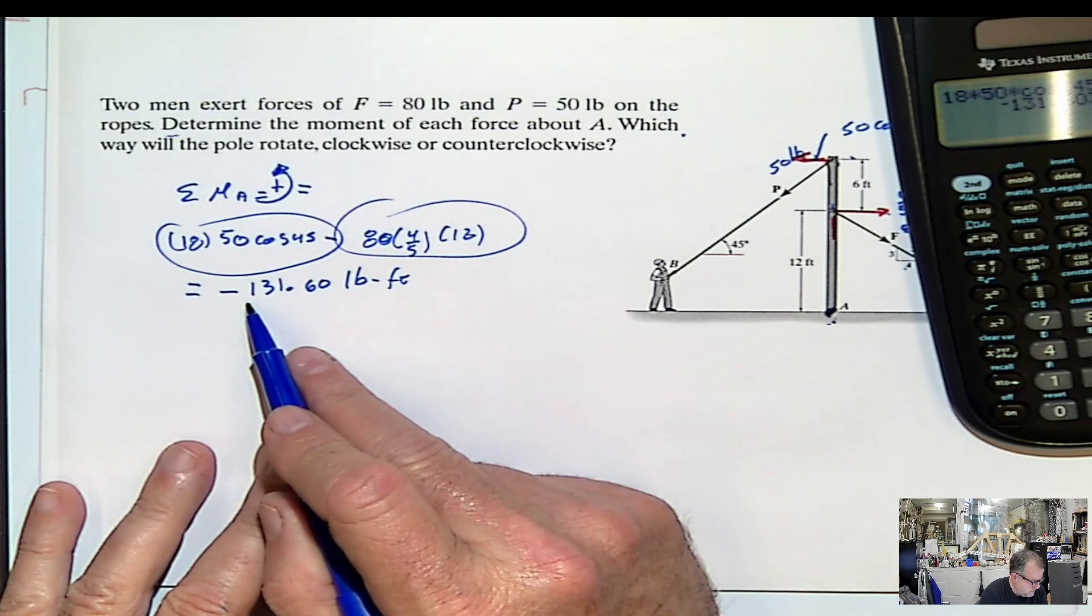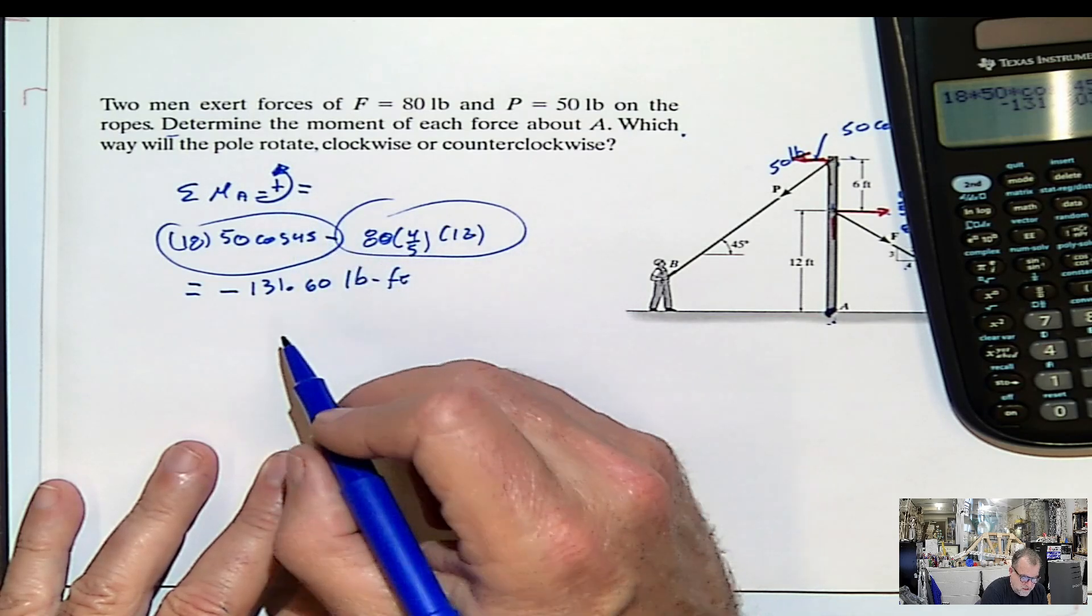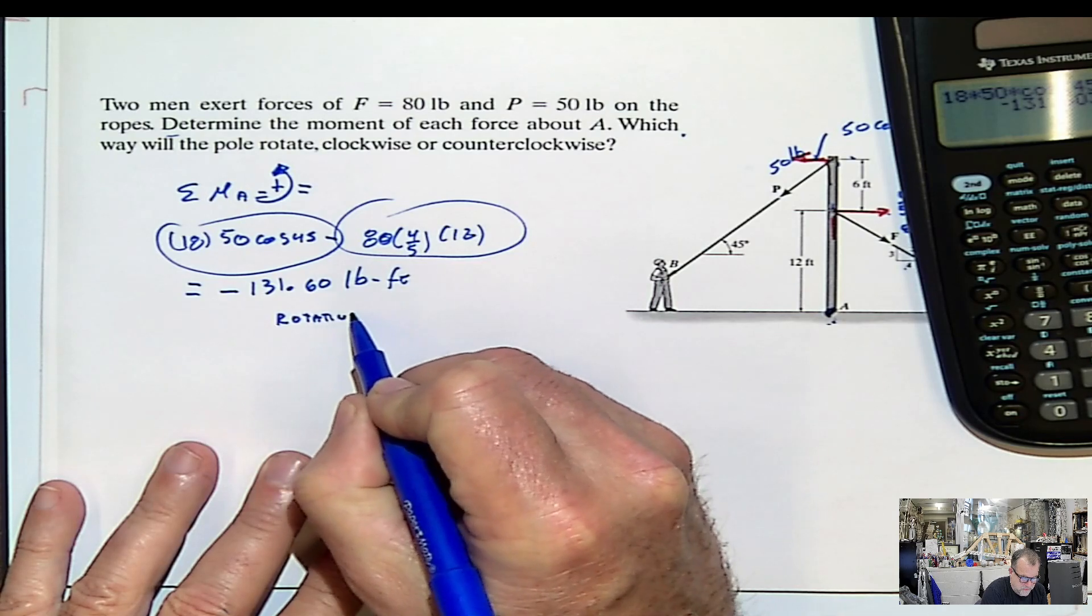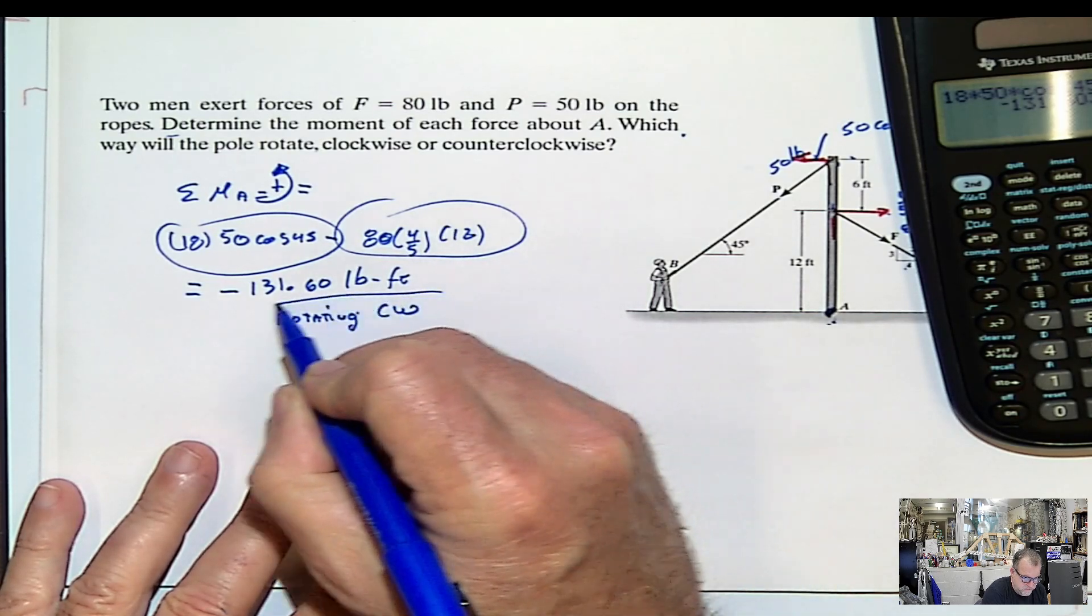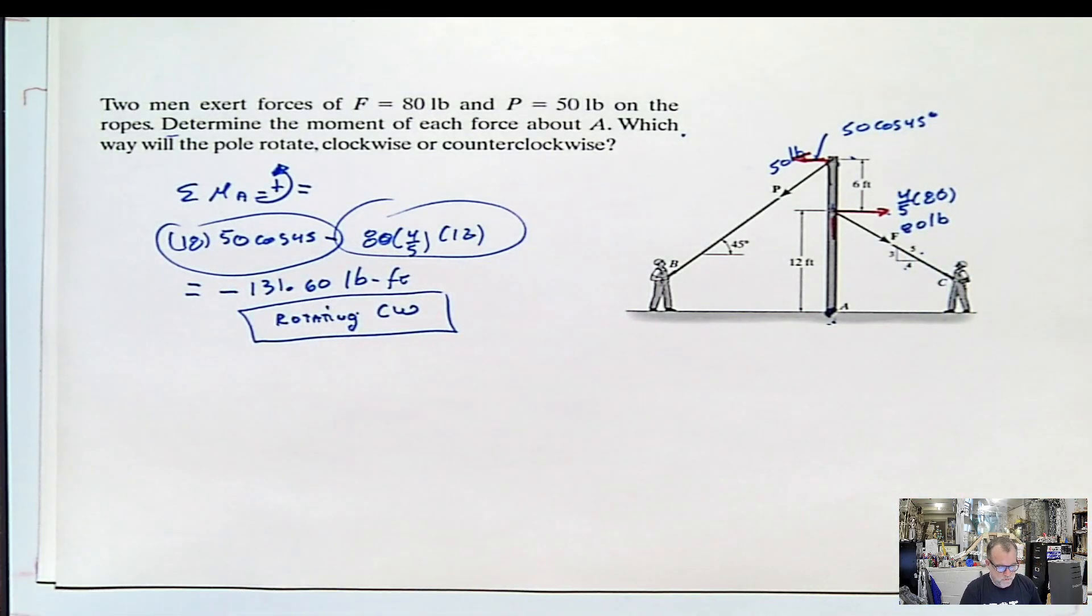And the fact that it's negative, and we assumed that counterclockwise is positive, that means that the pole is rotating clockwise. And that would be it. Super easy.